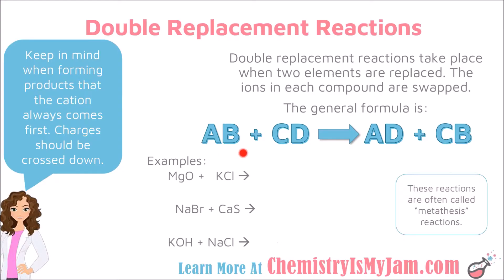In my first example, magnesium oxide is my AB and potassium chloride is my CD. So it is going to produce A and D. The magnesium and the chloride are going to come together to form a compound. The formula for magnesium chloride is MgCl2, and that comes from crossing down the charges. Magnesium has a charge of plus 2 and chloride has a charge of minus 1. You would cross those down to get MgCl2, and you should do that anytime you form a new compound to make sure that your subscripts are correct.